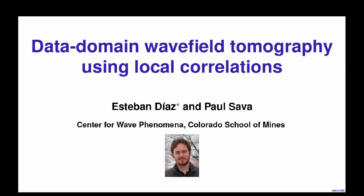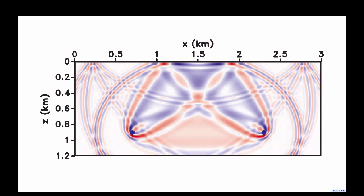Good morning everybody. Today we're going to discuss data domain wavefield tomography using correlations. I will show you some of the motivation based on shortcomings that arise from the use of global correlations. To introduce this problem, let me show you this gradient. You don't need to know much about it, but you can see that it contains a lot of events that arise from the crosstalk between seismic events during a global correlation process, propagated into the gradient, producing high wave number reflector-like events.